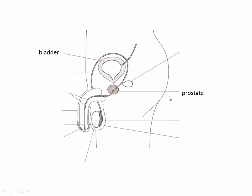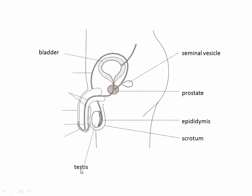The prostate and the seminal vesicles produce fluids that help to nourish and keep the sperm safe. The epididymis — the scrotum is the sac which contains the testicles, or the testes. From the side view you can only see one, but it's supposed to be a pair — there are two testicles. Singular is testis; plural is testes. They're also called testicles. This is where the sperm are developed. The epididymis is a place where the sperm mature and become able to swim, basically. You can see they take this long path around here, part of which is to pick up some of these extra fluids.